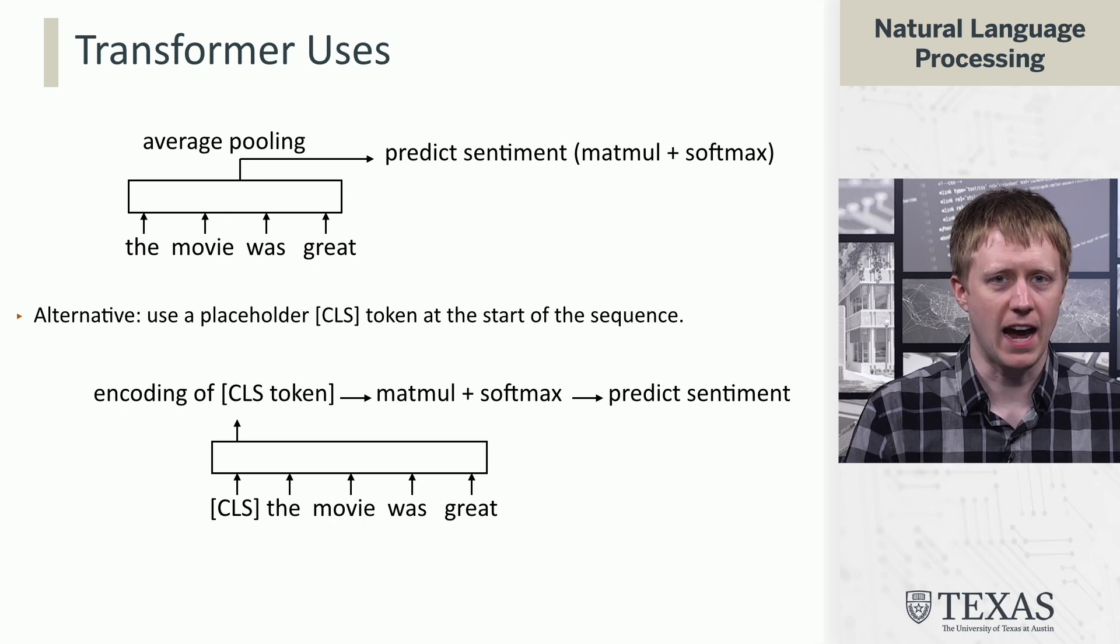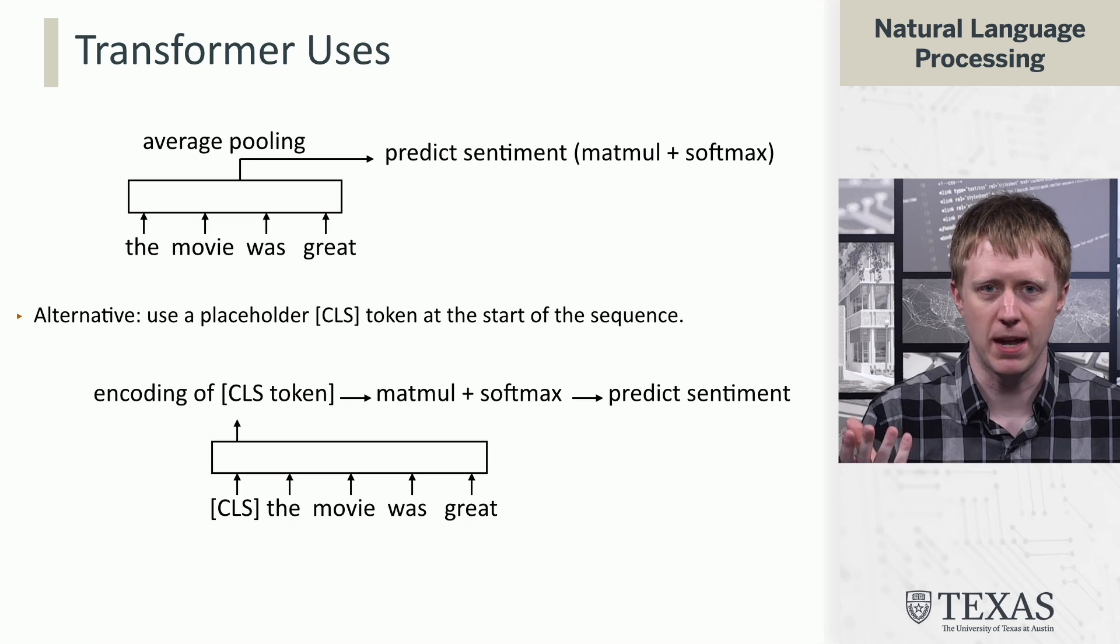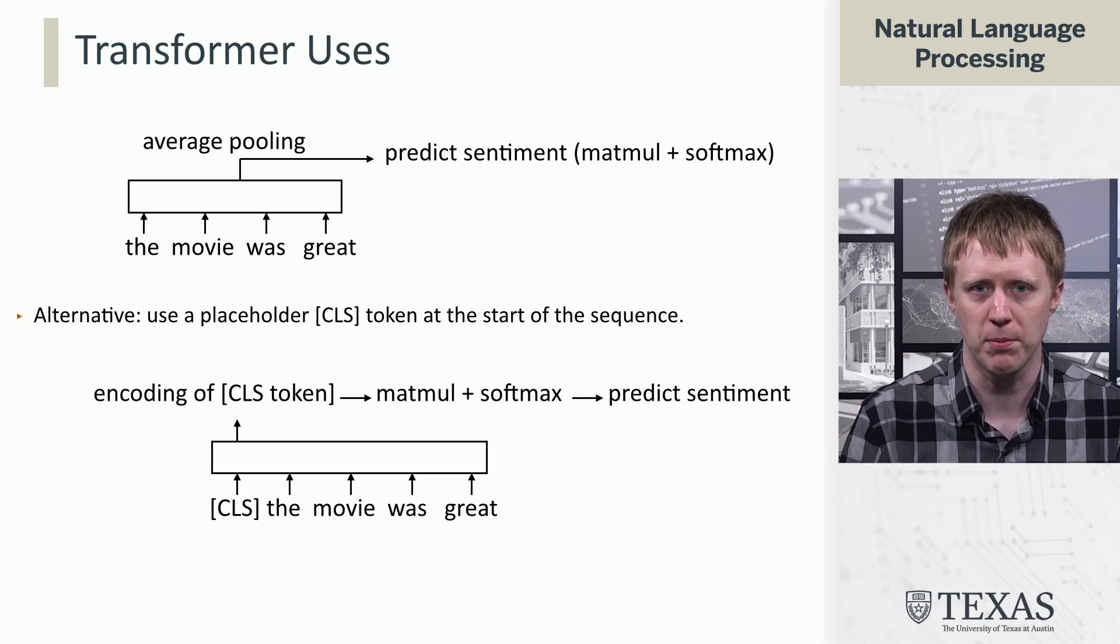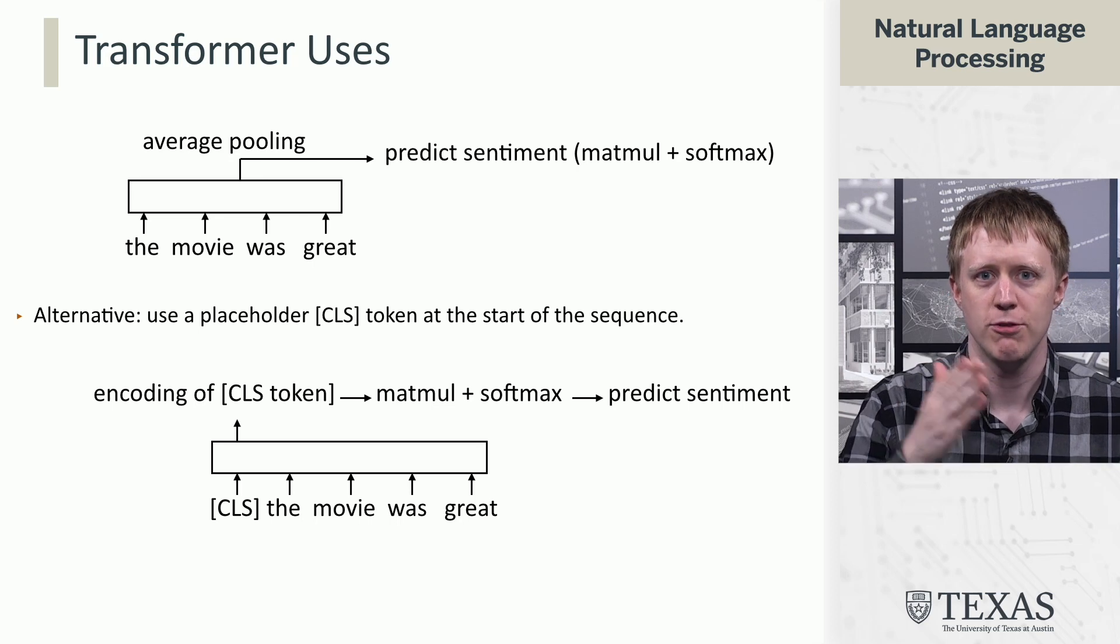Rather than averaging over the contextualized embeddings of the whole sequence, instead we just take the vector representation of the CLS token, feed that into matrix multiply and softmax, and then predict sentiment from there.